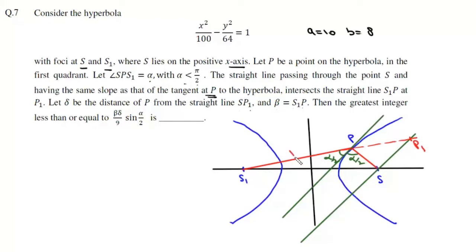Now beta is s1p, and delta is the distance of p from straight line sp1. So basically this is the perpendicular distance. This distance is delta. Now we need to find the value of the greatest integer function of beta delta upon 9 sin alpha by 2.